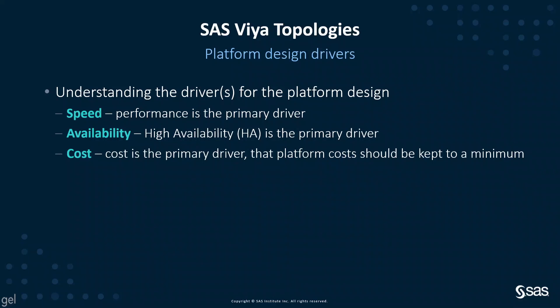You need to understand the platform design drivers. We can categorize them into three areas: speed — is performance the primary driver? Or perhaps availability — high availability could be the primary driver for the platform design. Or perhaps cost — the platform cost should be kept to a minimum.